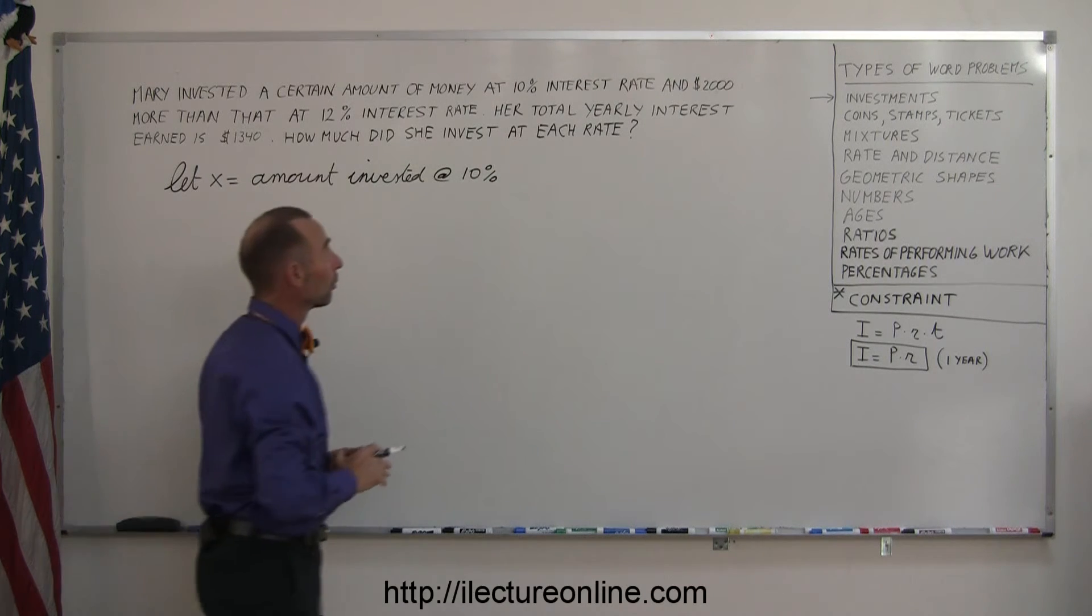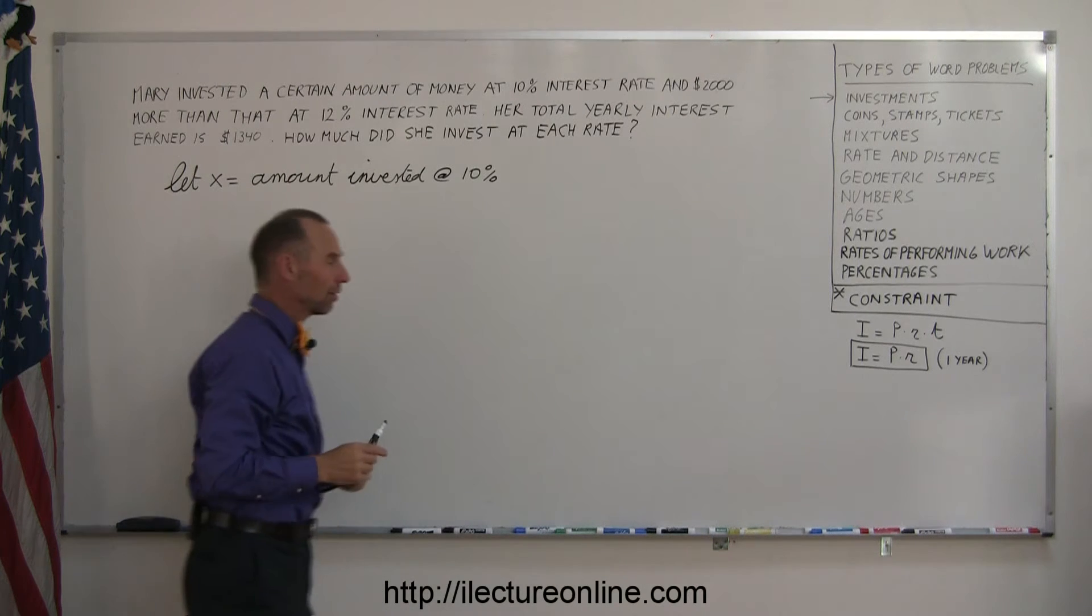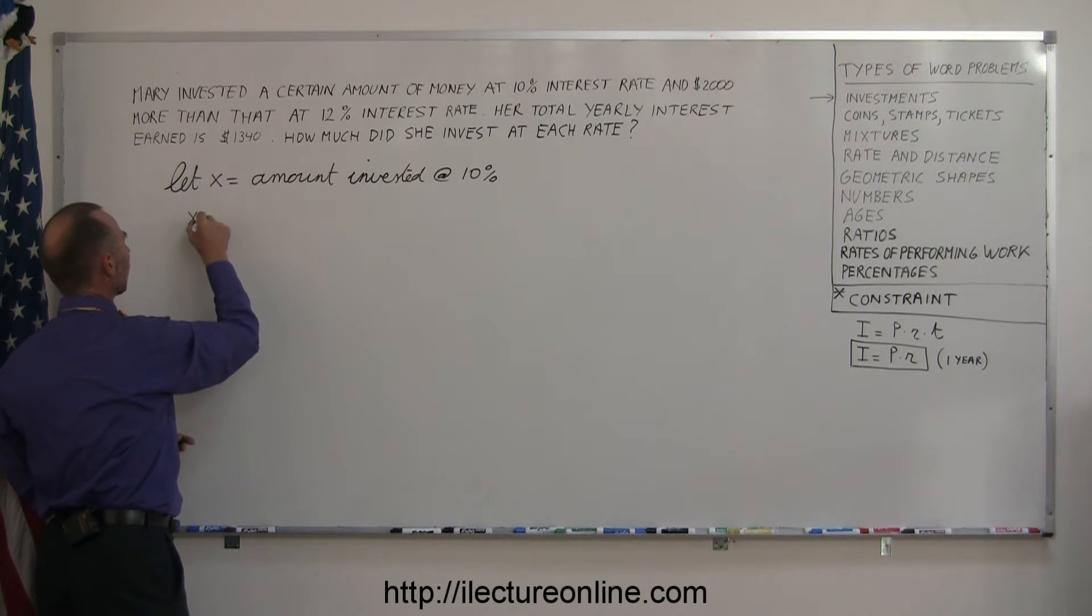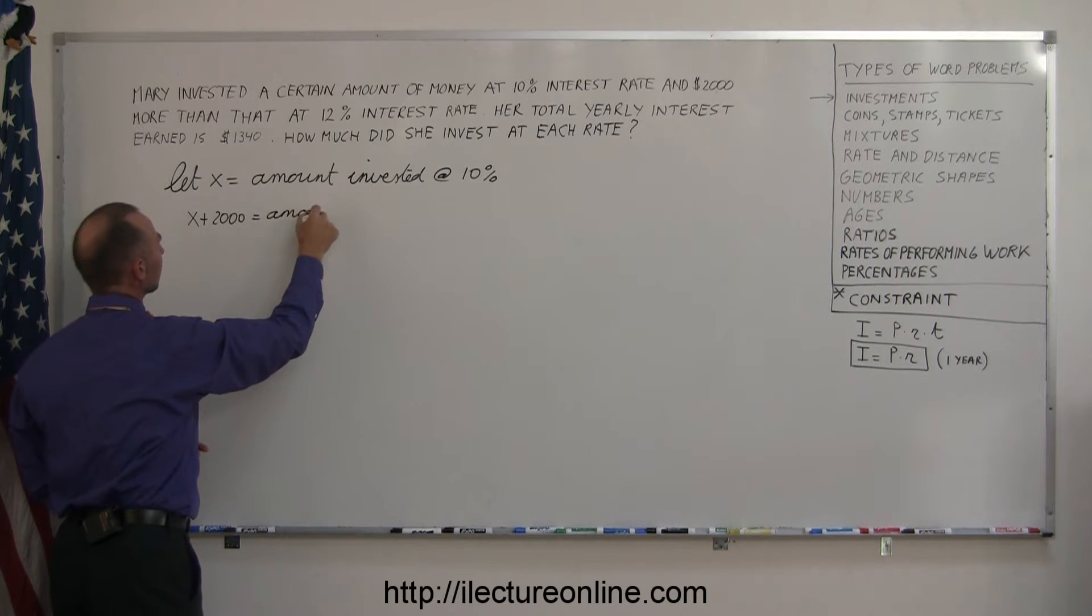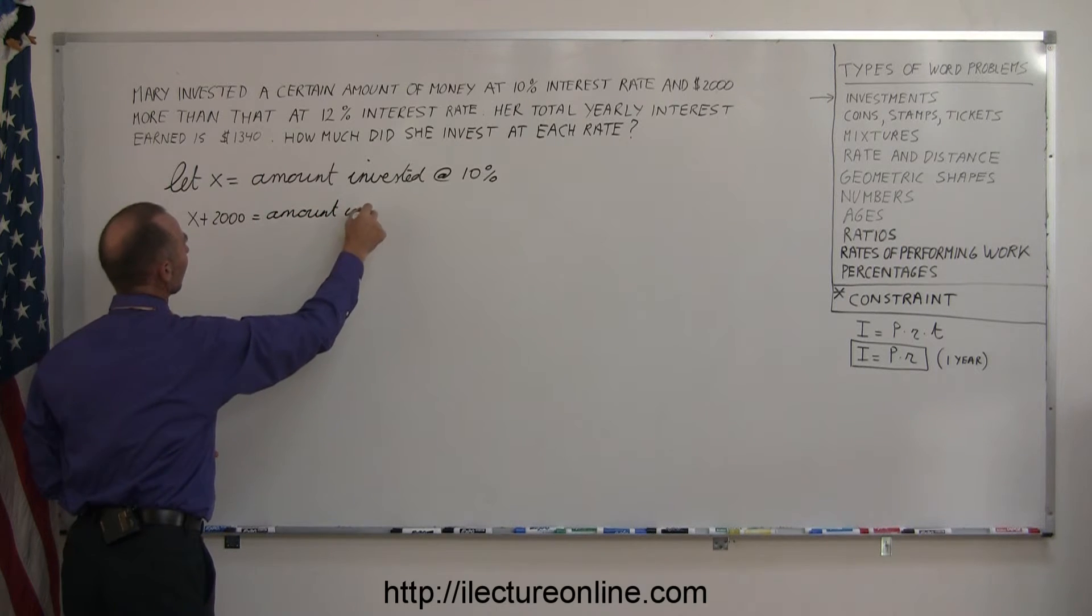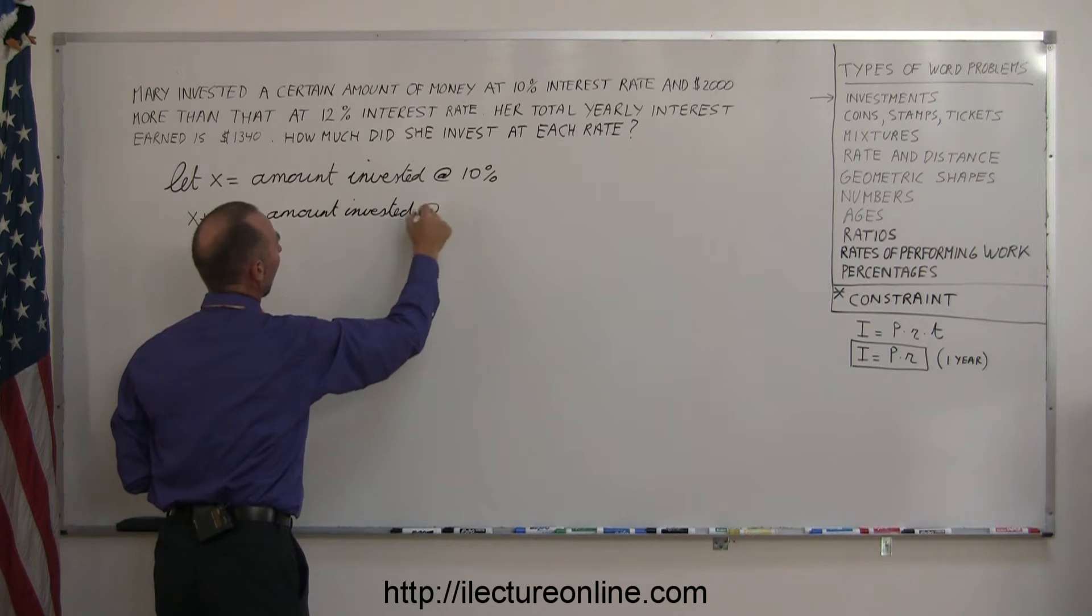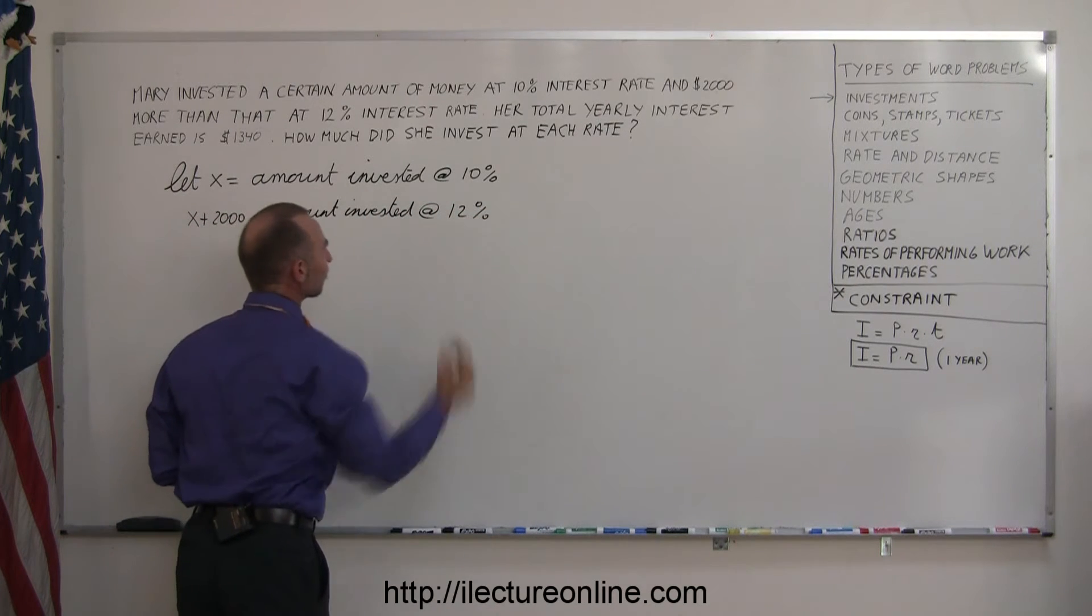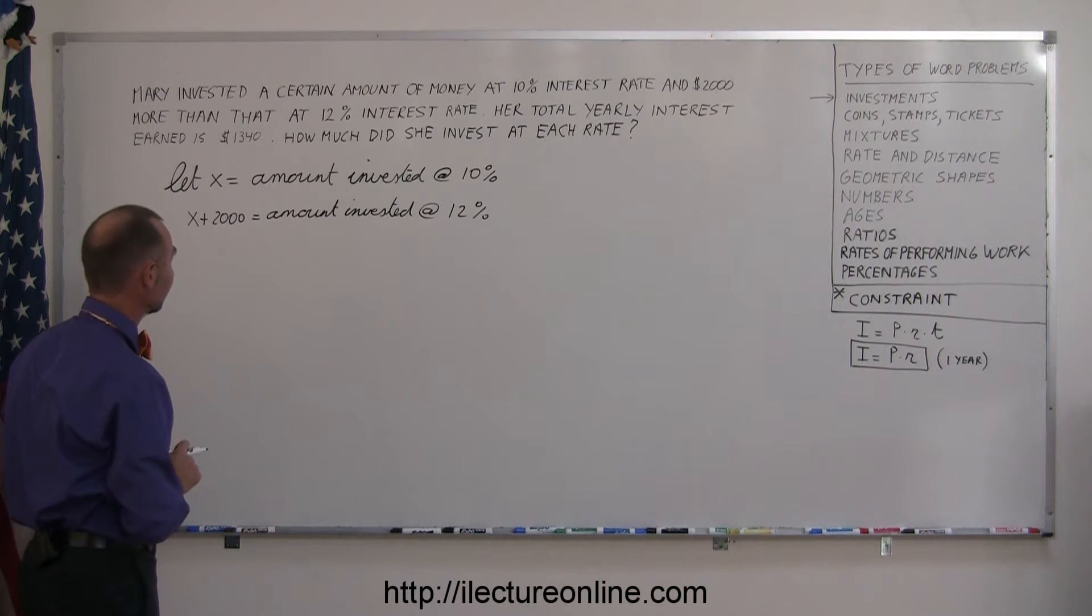Then it says Mary's going to invest $2,000 more than that at 12%. So x plus 2,000 equals the amount invested at 12%. It's very important that you define very carefully what these are.